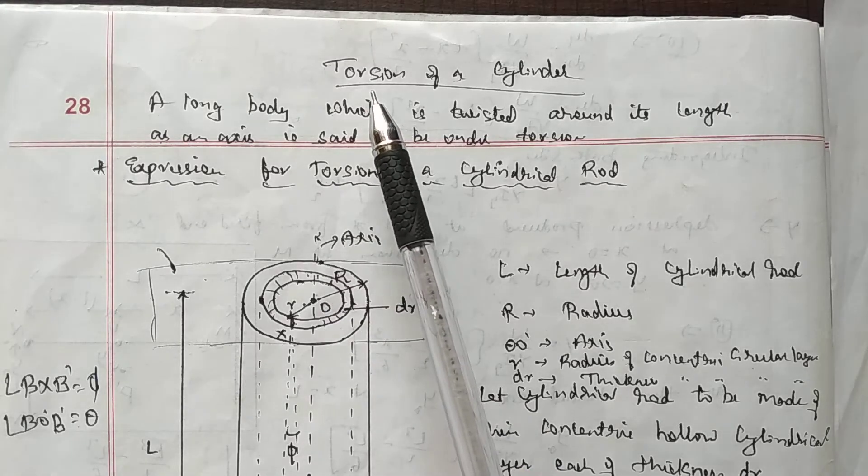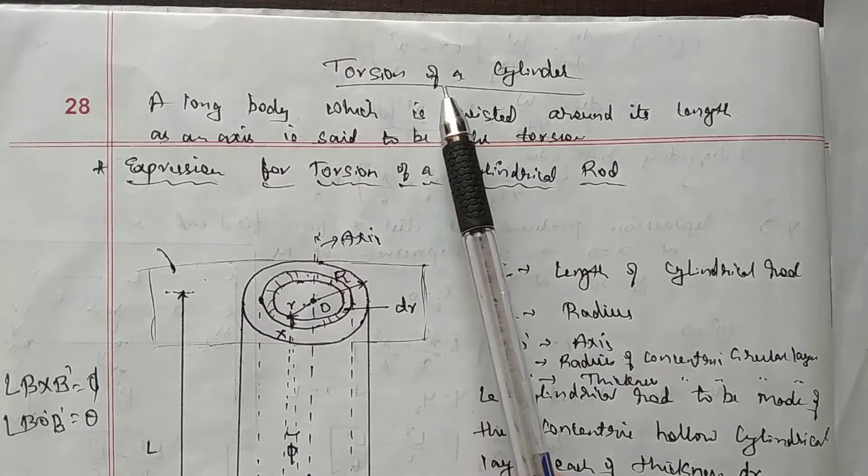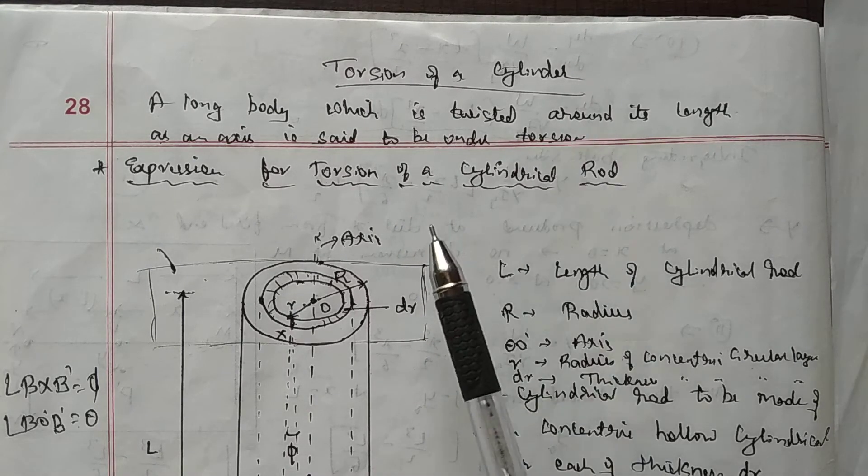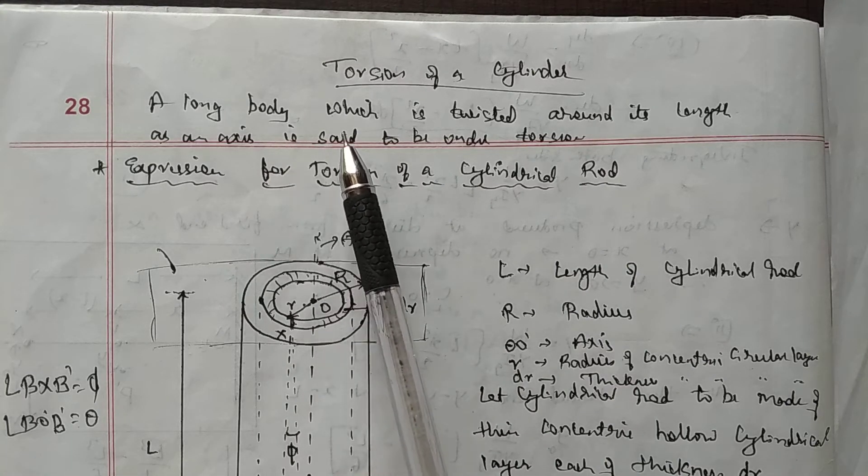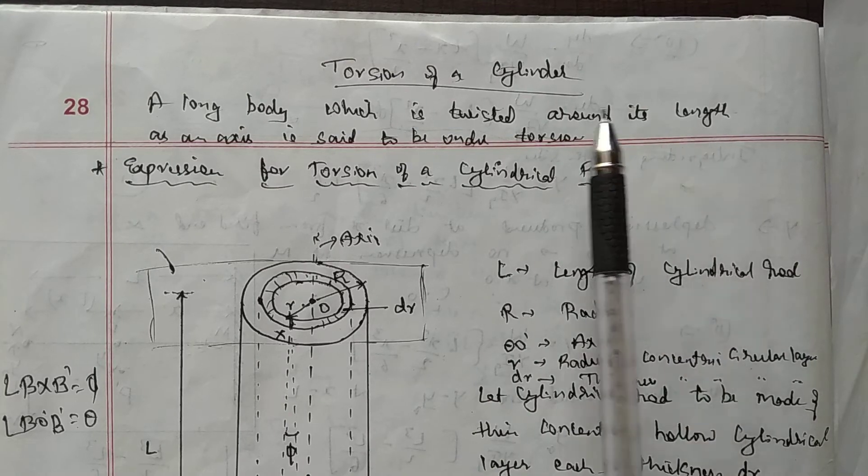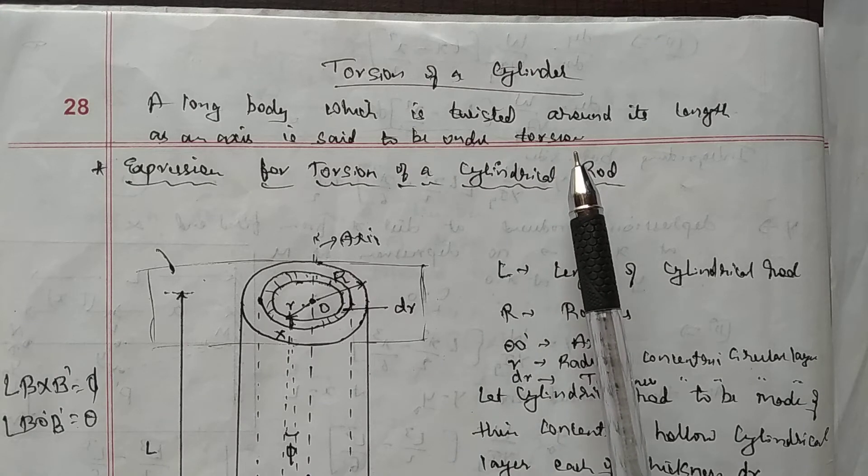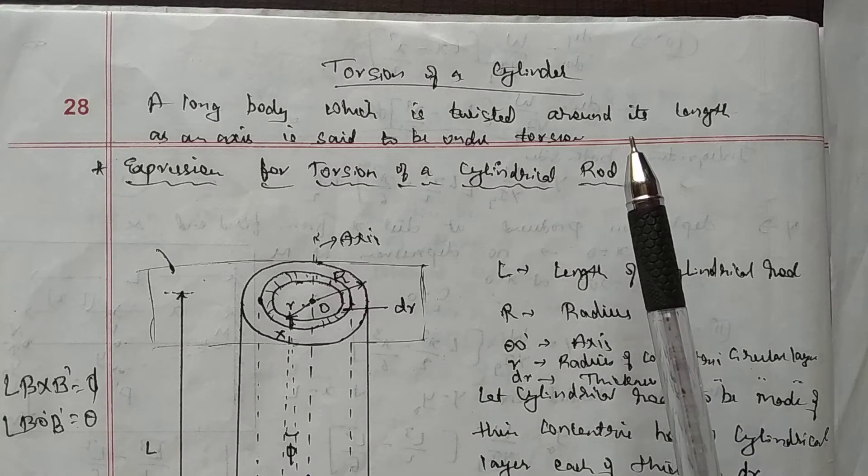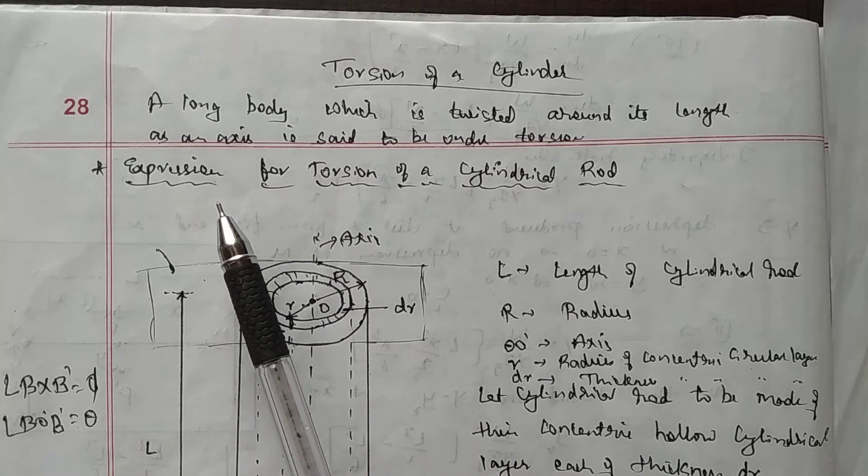Welcome back. Now we will start with the last topic, that is the torsion of a cylinder. What is the meaning of torsion of a cylinder? It is nothing but a long body which is twisted around its length as an axis is said to be under torsion. So with this, we will try to find out the expression for the torsion of a cylindrical rod.